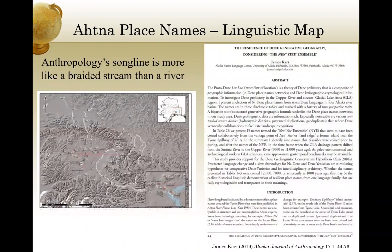Recently I had the pleasure of editing an article by a linguist in Alaska with the Native Alaska Language Center, Jim Carey. The paper is about Ahtna place names, and he details through the place names of the Ahtna Athabascan language how Ahtna would have been able to navigate through the mountainous and rugged terrains of South Central Alaska, even in places they hadn't traveled before, simply by knowing their language. So from generation to generation, embedded within their language is the geography of the terrain in which they lived.